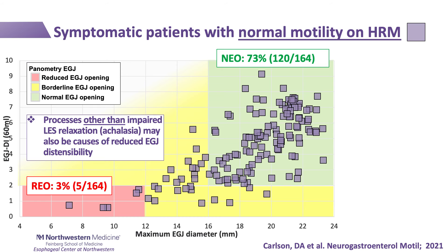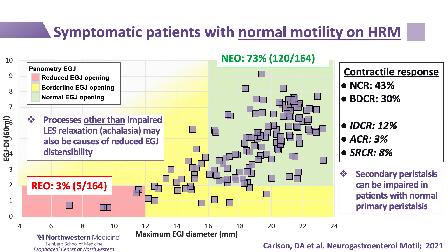As we evaluated secondary peristalsis in this group with normal primary peristalsis, we most frequently saw patterns with antegrade contractions, though 27 percent had impaired secondary peristalsis — an observation previously made by Richard Holloway and colleagues in studies evaluating secondary peristalsis with conventional manometry and focal balloon distension.